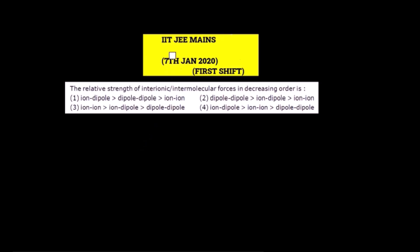Today we are going to discuss the IIT JEE Mains paper held on 7th January 2020, first shift. The question asks: what is the relative strength of interionic/intermolecular forces in decreasing order? We need to identify the correct option from the four given.